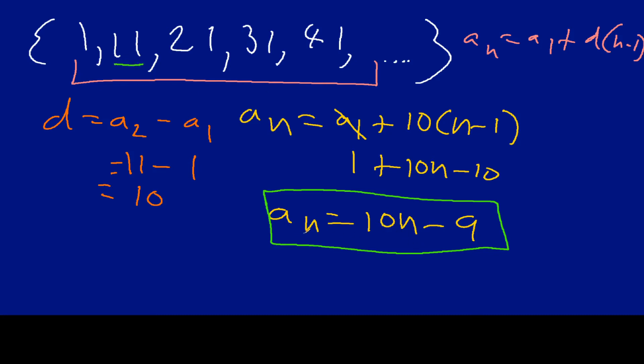If I put in 3 here, a sub 3, 3 times 10 will be 30, minus 9 will be 21. So, you can see that our formula works. It looks like we're done. And so, this is one example of how to find the nth term for the explicit formula for a particular arithmetic sequence.